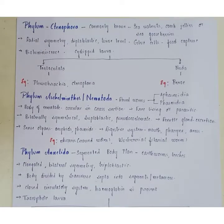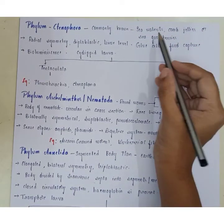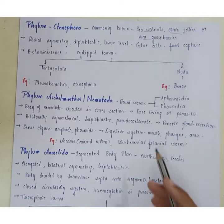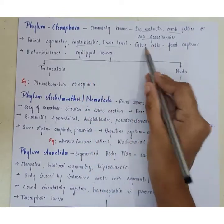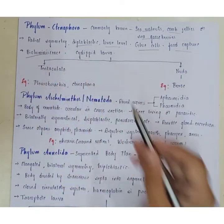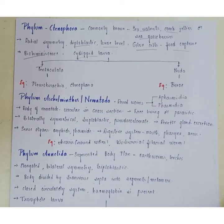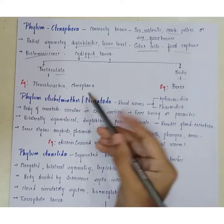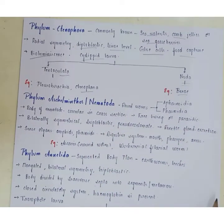Phylum Ctenophora members are commonly known as sea walnuts, comb jellies, or sea gooseberries. They show radial symmetry and are diploblastic with tissue-level organization. They contain glue cells for food capture and exhibit bioluminescence. The larval form is called cydippid larva. Classified into Tentaculata and Nuda. Examples of Tentaculata include Pleurobrachia; examples of Nuda include Beroe.